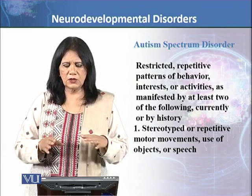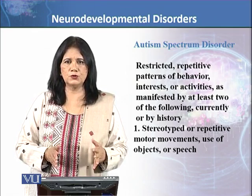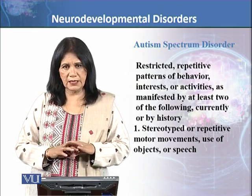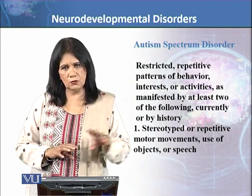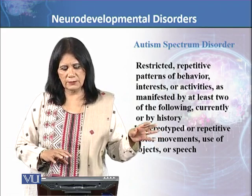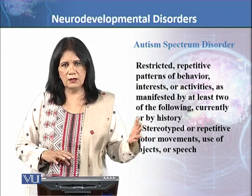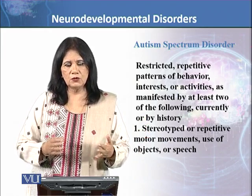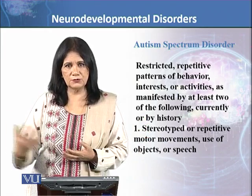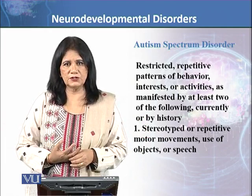Autism Spectrum Disorder is not confined only to childhood — it can happen throughout the life of an individual. So when an individual seeks help as an adult, you will need to look at their previous history to identify what features were present earlier.